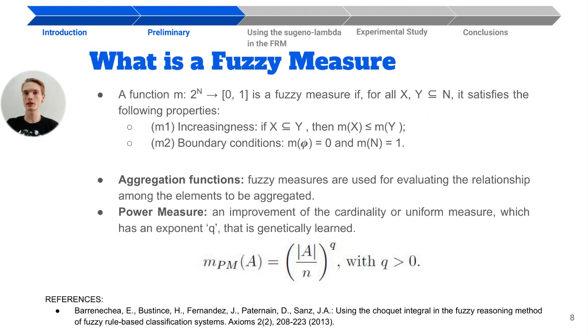Okay, so the aggregation functions are responsible for capturing the set of parameters and finding the best value that represents them. In our case, the Choquet integral is the function used to aggregate the fuzzy measures, evaluating the relationship between the elements to be aggregated.